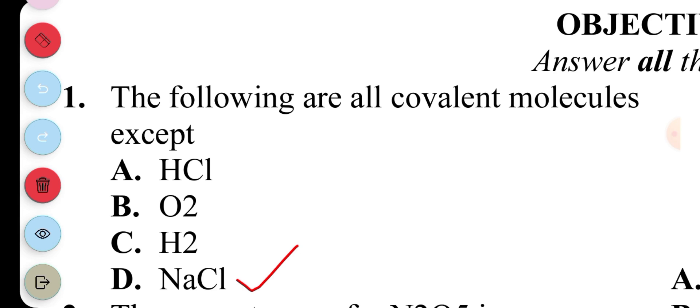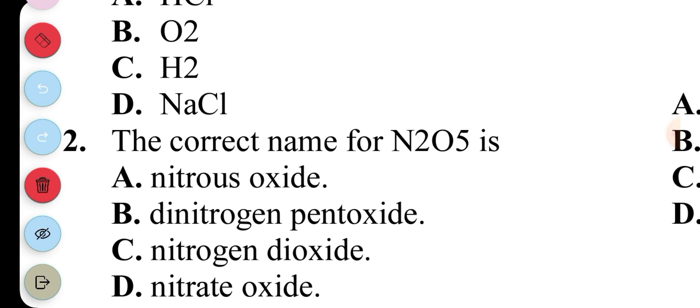Question 2: The correct name for N2O5 is, looking through, the correct answer is Dinitrogen pentoxide.